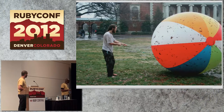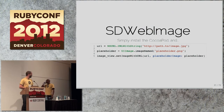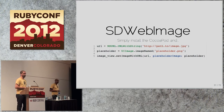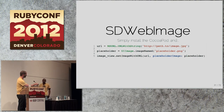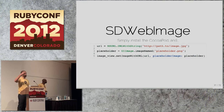SDWebImage is the solution. You include it via CocoaPods, get a regular NSURL, set a local placeholder image to show while loading, and then it adds a 'setImageWithURL:placeholderImage:' method onto your UIImageView. You give it the URL and placeholder and it just does it — uses a background thread or GCD, loads them all simultaneously. It's basically a no-brainer.